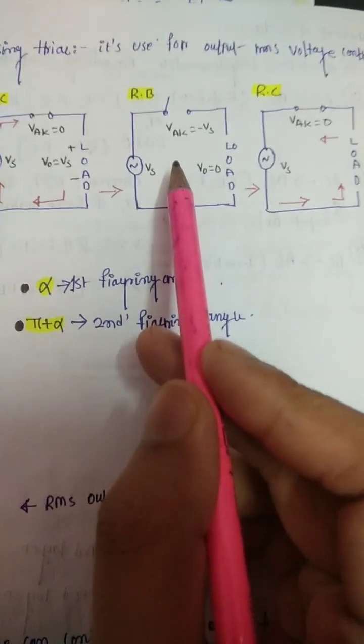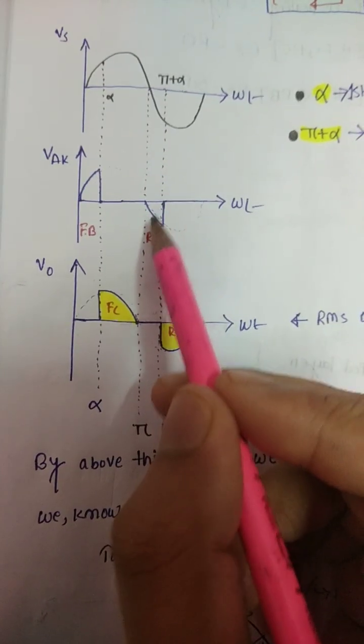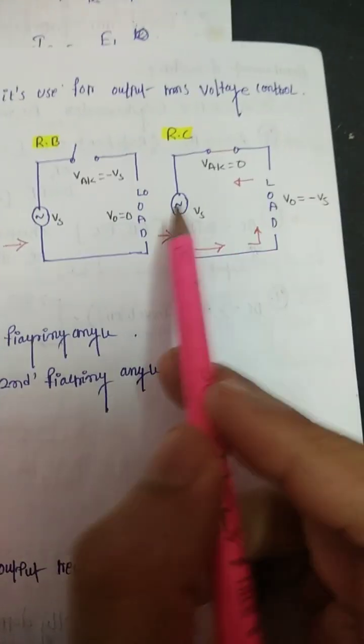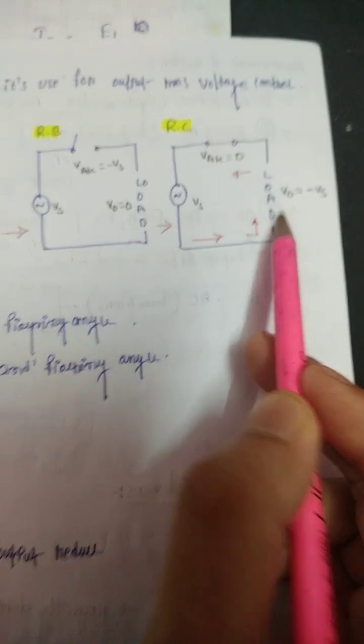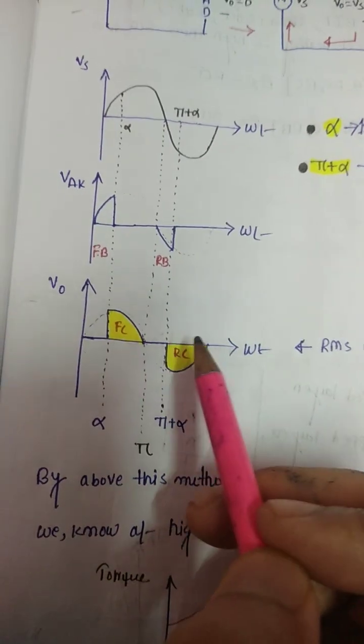In reverse blocking mode, the reverse voltage will be blocked. This is the reverse voltage across the thyristor. The last one is reverse conduction mode, where the output voltage directly equals the input voltage. This means that this area is reflected to the output side.